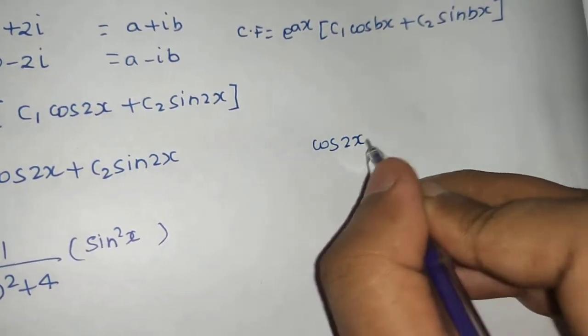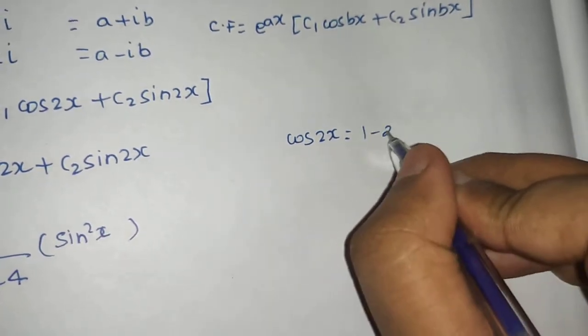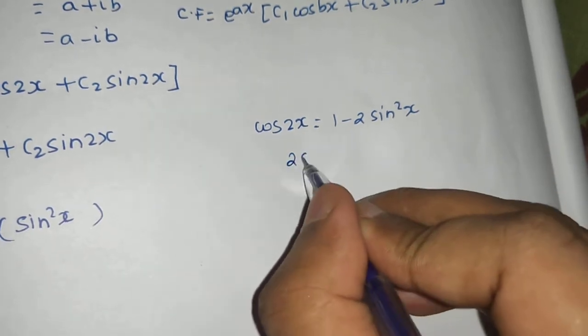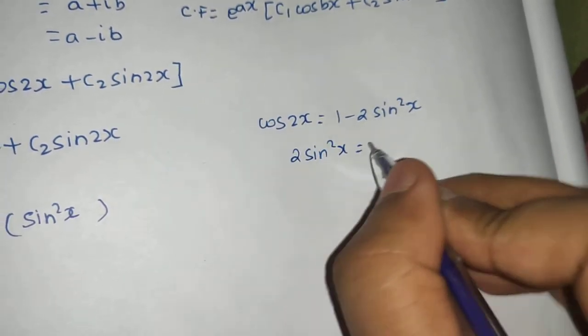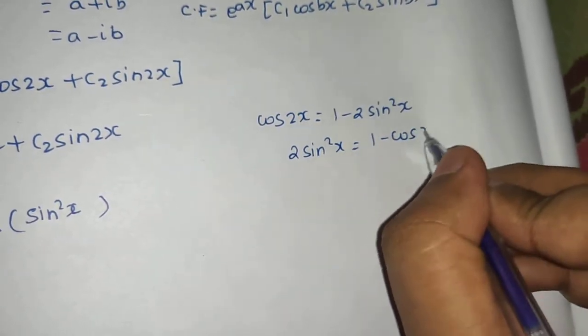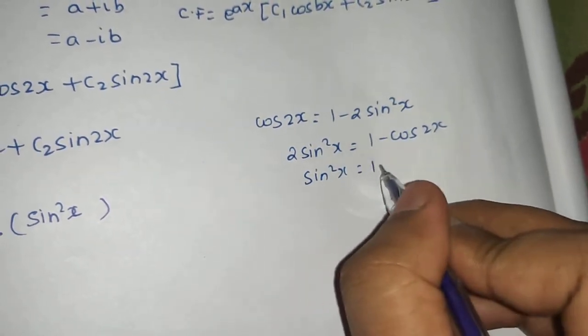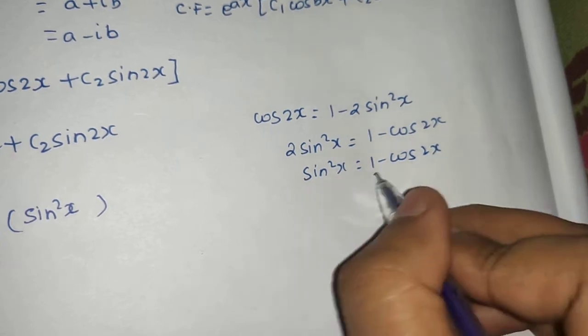Now we don't have any rule for sin square x, so what we do? We know one formula that cos 2x is 1 minus 2 sin square x. So 2 sin square x will be 1 minus cos 2x. Sin square x will be 1 minus cos 2x divided by 2.